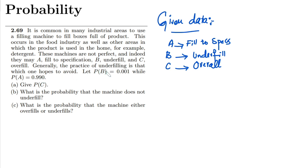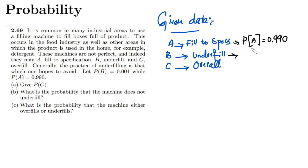Generally the practice of underfilling is what one hopes to avoid. Let P(b) be the probability of underfill, which is 0.001, while the probability of fill to specs, P(a), is 0.990. This is a very good system because the probability of fill to specs is higher, while the probability of underfill P(b) is 0.001.